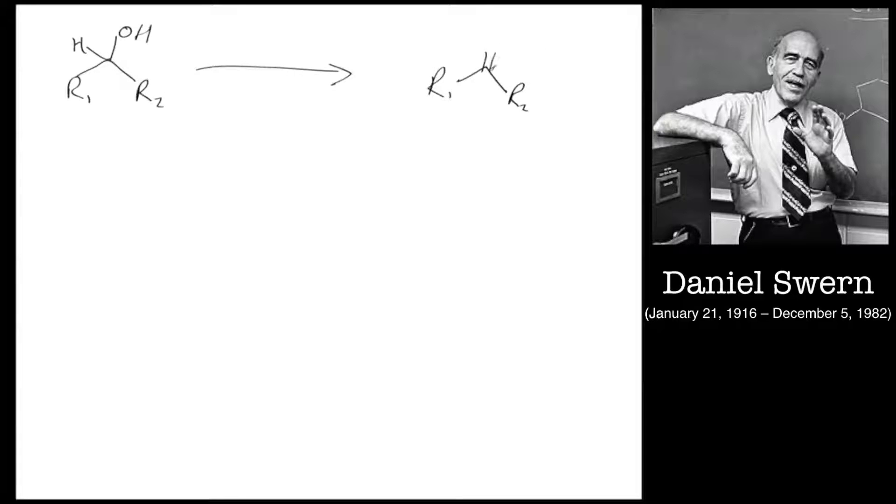The reagents for that are DMSO, oxalyl chloride, and that's usually done with a base which is usually triethylamine in dichloromethane called DCM. That's typically done at minus 78 degrees in the first stage, and you can get that by using acetone and CO2 card ice, solid CO2.